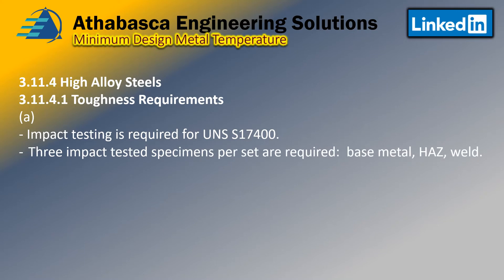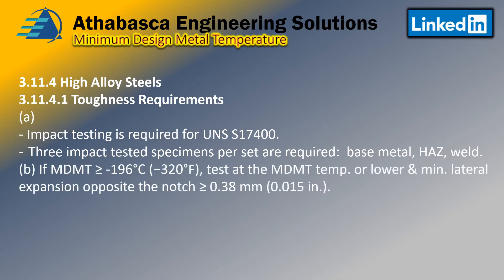There are three types of tests required: the base metal, the weld — right in the middle of the weld — and the heat affected zone, the HAZ, which is the interface between the two. If your MDMT is greater than minus 196°C or minus 320°F, then you test at that required MDMT temperature or lower. The minimum lateral expansion must be measured opposite the notch, and that notch must be at least 0.38 mm or 0.015 inches.